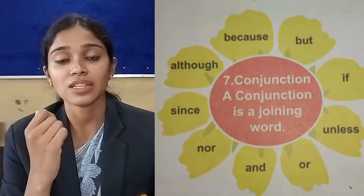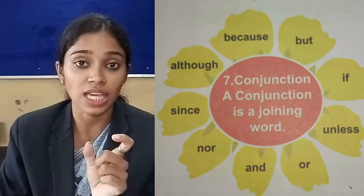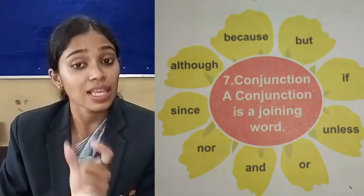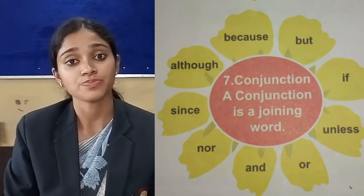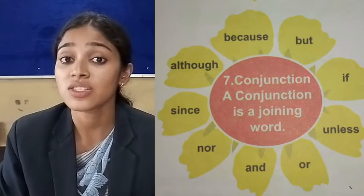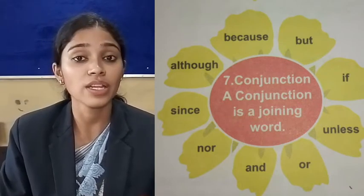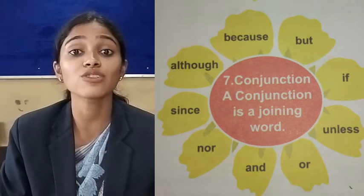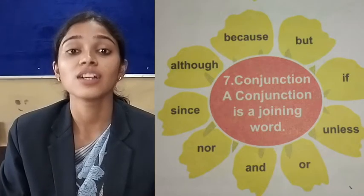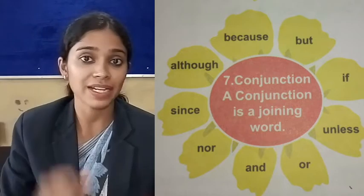So when two separate sentences are joined together with the help of one word, that word is known as conjunction. As the definition says, a conjunction is a joining word. When two sentences are joined together with the help of a word, it is known as conjunction. See the examples in the petals of the flower.